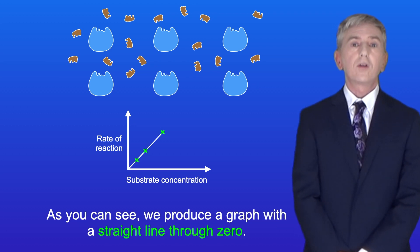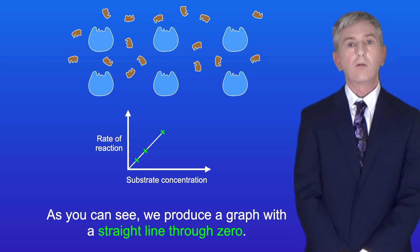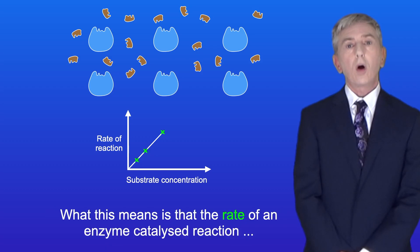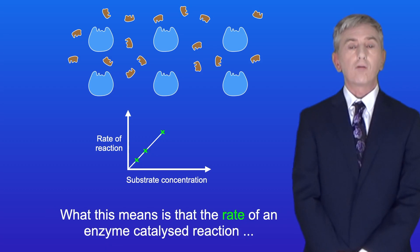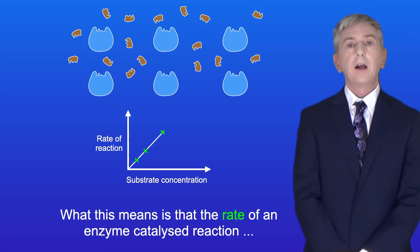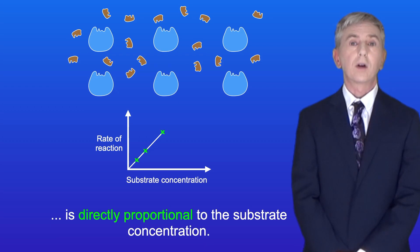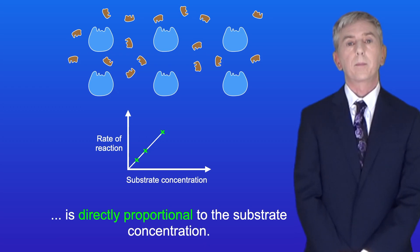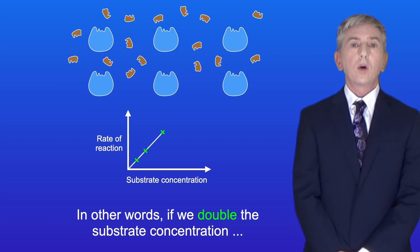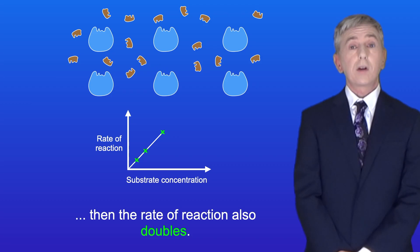As you can see we produce a graph with a straight line through zero, and what this means is that the rate of an enzyme catalyzed reaction is directly proportional to the substrate concentration. In other words, if we double the substrate concentration, then the rate of reaction also doubles.